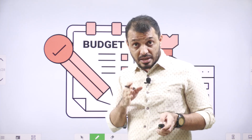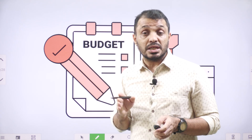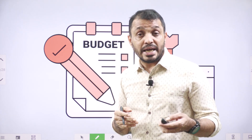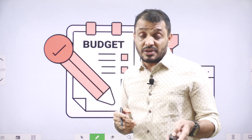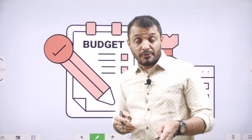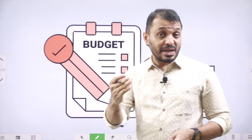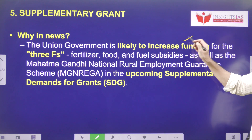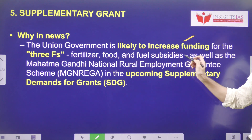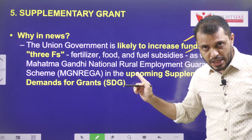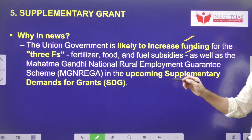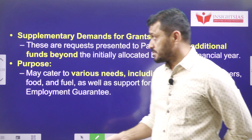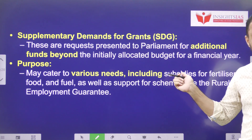If the government would like to transfer money from one department to another, it may go for a token grant. If parliament allows the government to take an unlimited amount of money — like a blank check — that is known as a Vote of Credit. Whatever money is spent through Vote of Credit is audited by the PAC. The Union government would like to increase funding for fertilizers, food, and fuel subsidies as well as for MGNREGA by introducing supplementary demands for grants in the winter session.